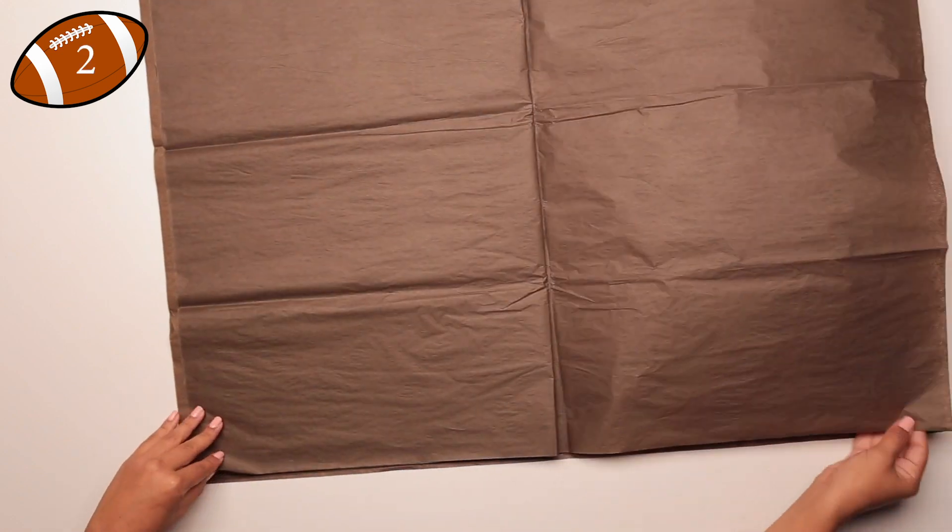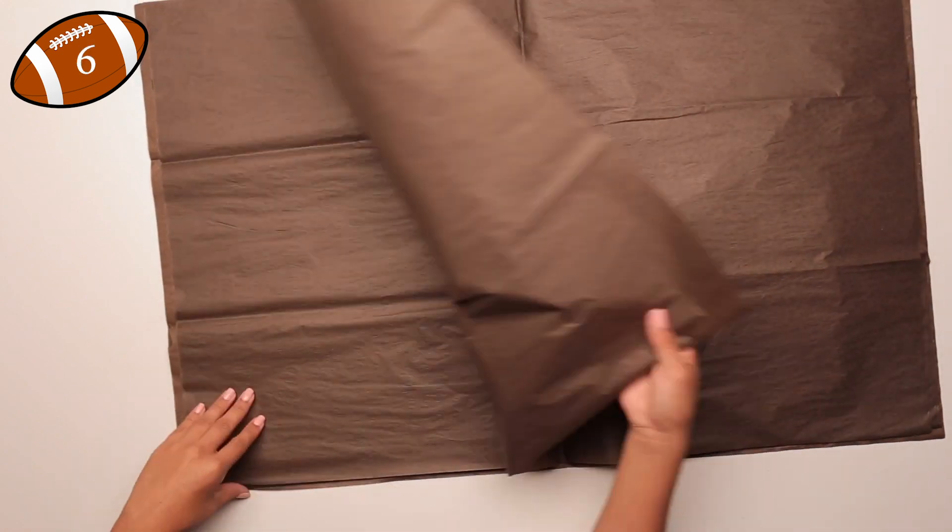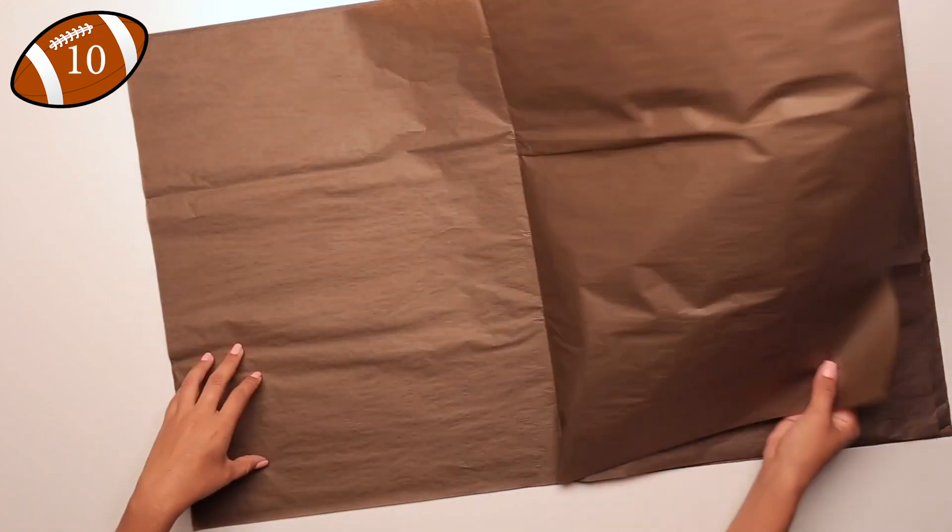Next I'll stack 10 sheets of brown tissue paper and cut layers into them. This will help achieve the football shape.